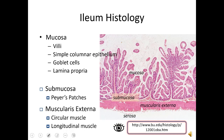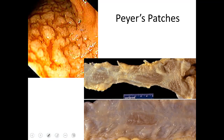We have the muscularis externa — circular and longitudinal muscle. The Peyer's patches look like this: doing a scope inside the patient you can see them, and with the intestine cut open you can see a patch here, another patch here — they're in isolated areas with normal tissue between them.